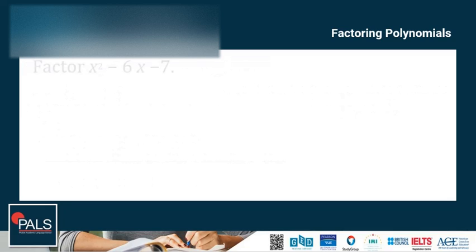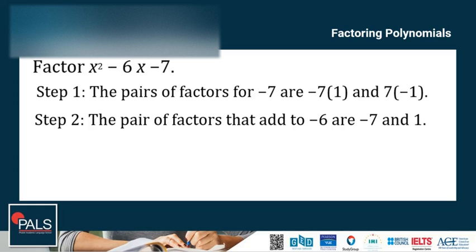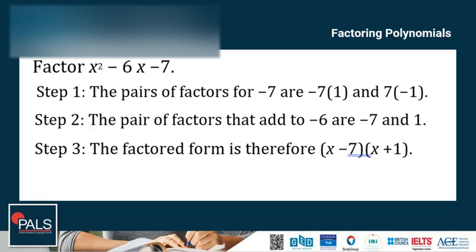Let's try another example. Factor x squared minus 6x minus 7. Step 1: the pairs of factors for negative 7 are negative 7 and 1, and 7 and negative 1. Step 2: the pair of factors that add up to negative 6 is negative 7 and 1. Step 3: the factored form is (x minus 7)(x plus 1).